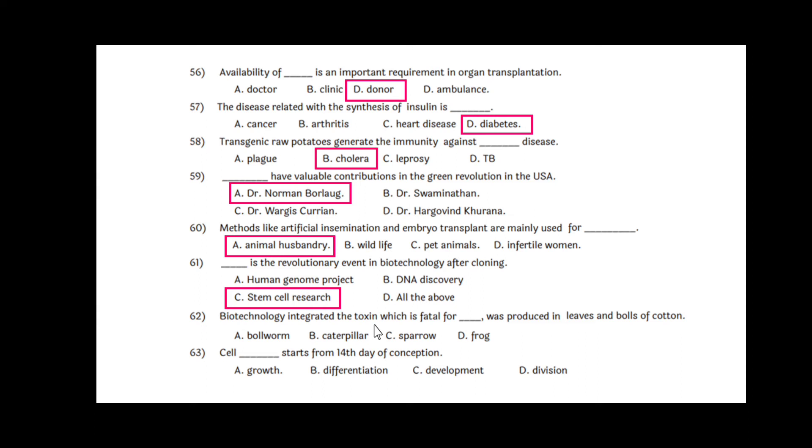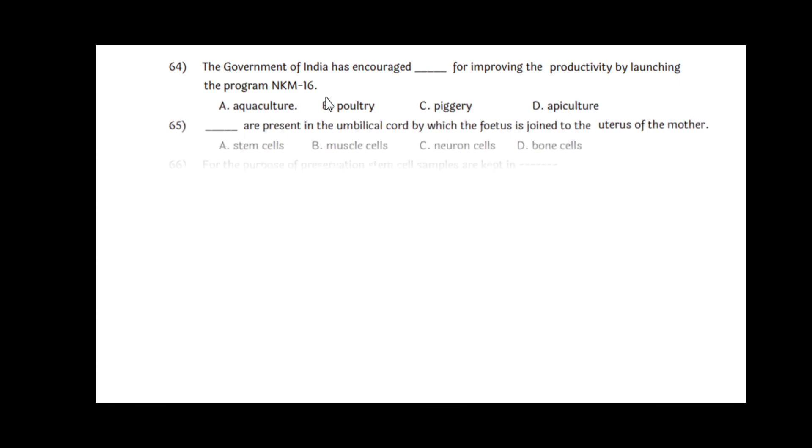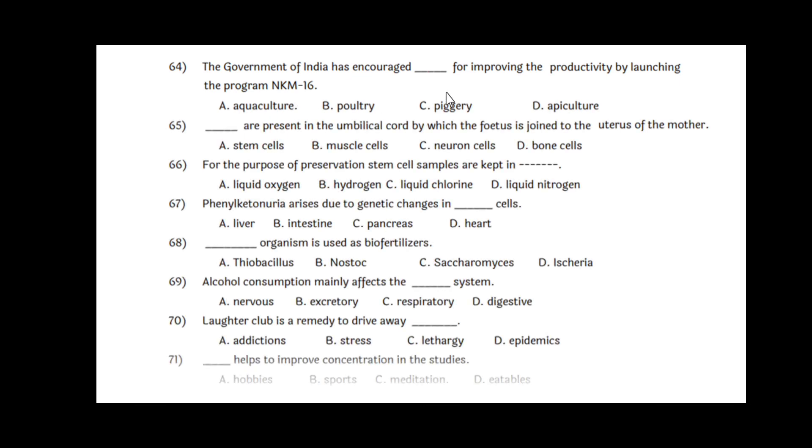Question 62: Biotechnology integrated. The toxin which is fatal for dash was produced in leaves and bolls of cotton, and the answer is bollworm, option A. Question 63: Cell dash starts from 14 days of conception, and the answer is differentiation, option B. Question 64: The government of India has encouraged dash for improving productivity by launching the program NKM-16, and that is aquaculture, option A. Question 65: Dash are present in the umbilical cord by which the fetus is joined to the uterus of the mother, and that is stem cells, option A.